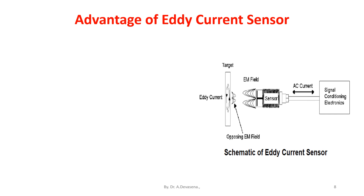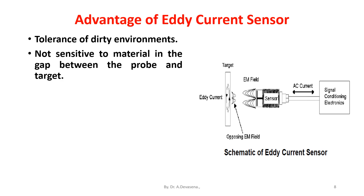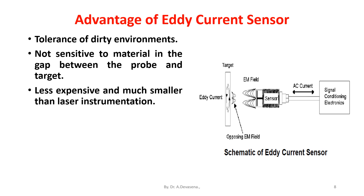Advantages of eddy current sensors: 1. Tolerance of dirty environment. 2. Not sensitive to material in the gap between the probe and target. 3. Less expensive and much smaller than laser interferometers. 4. Less expensive than capacitive sensors.